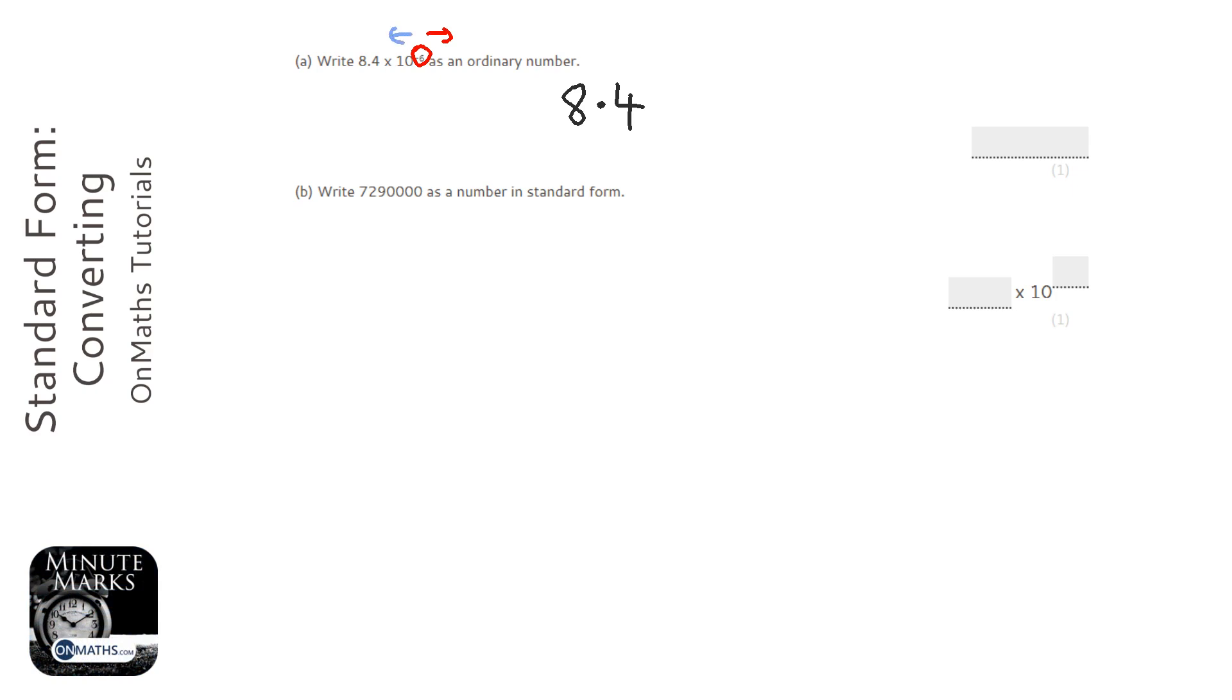Now since it's negative we're going to jump to the left and it's minus six so we've got to jump six spaces: one, two, three, four, five, and six.